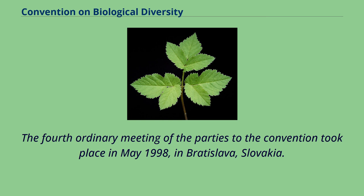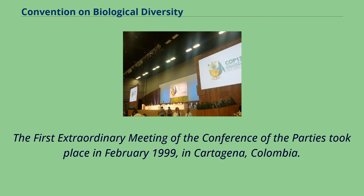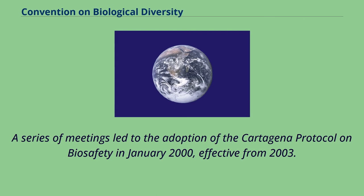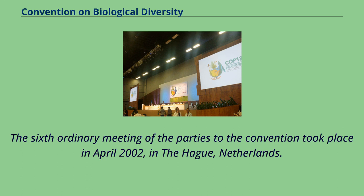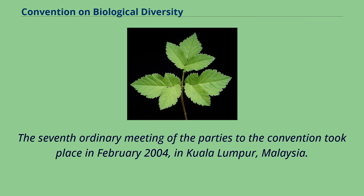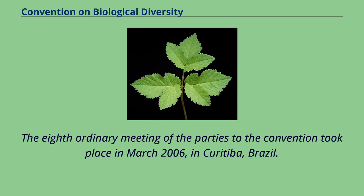The first extraordinary meeting of the Conference of the Parties took place in February 1999 in Cartagena, Colombia. A series of meetings led to the adoption of the Cartagena Protocol on Biosafety in January 2000, effective from 2003. The fifth ordinary meeting took place in May 2000 in Nairobi, Kenya. The sixth took place in April 2002 in The Hague, Netherlands. The seventh took place in February 2004 in Kuala Lumpur, Malaysia. The eighth took place in March 2006 in Curitiba, Brazil.